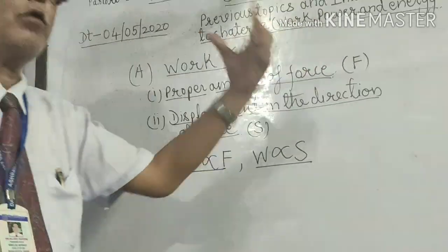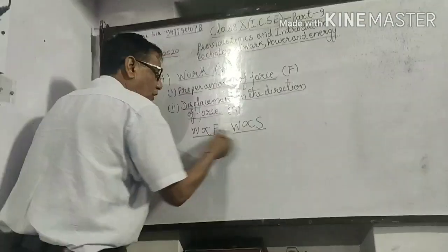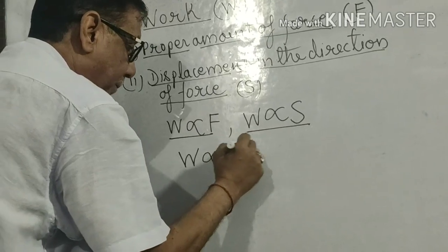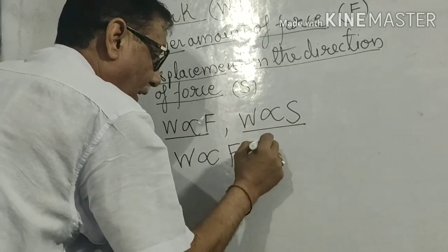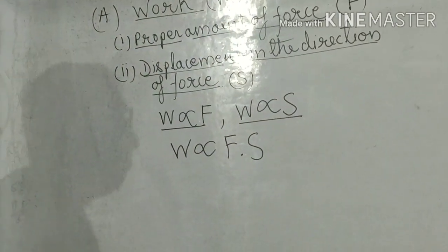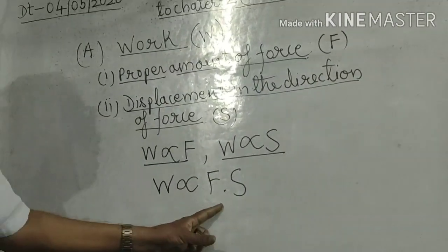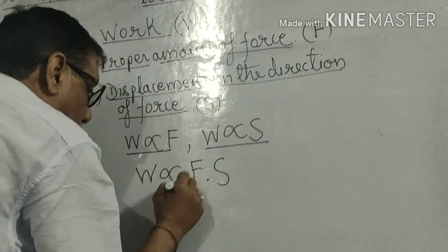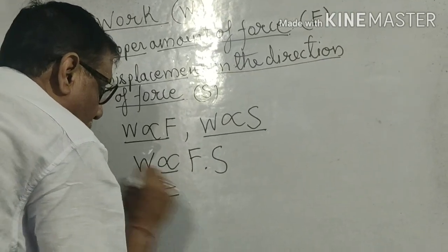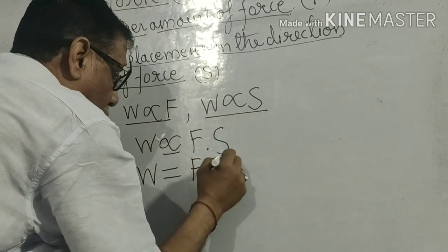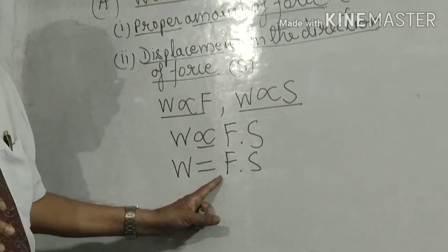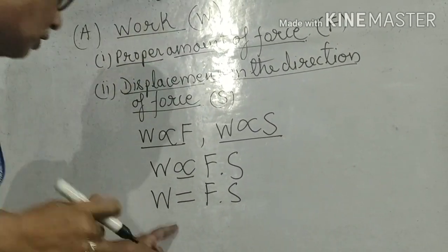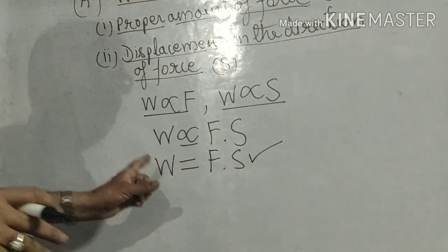These are the two facts which you have gathered, and now these two things will make the formula. We will combine both these two facts: W is directly proportional to F as well as multiplied by S. Now this is a proportionate relation you have obtained, and this sign of proportionality is replaced by equals sign, giving W = F × S. Here comes a constant always, and in SI units we generally take the value of that constant as 1.